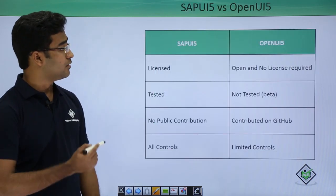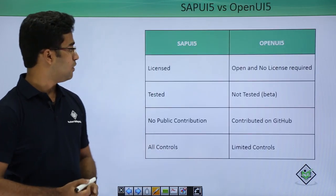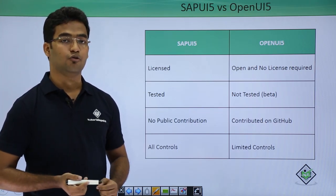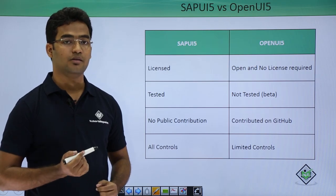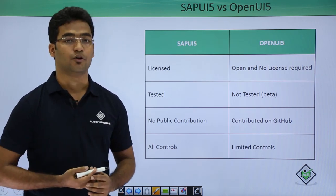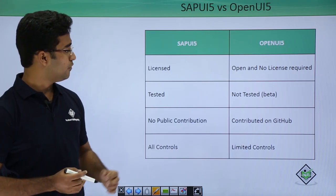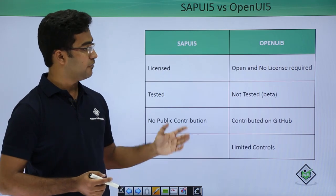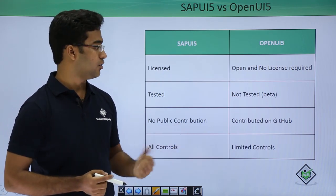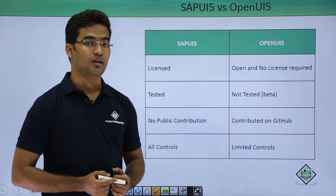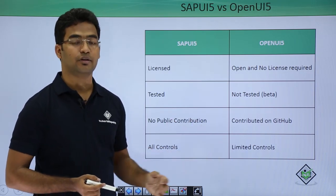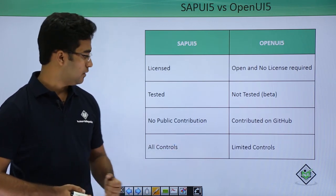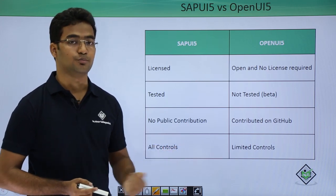Now let us compare SAPUI5 and OpenUI5. SAPUI5 is the licensed product of SAP, but OpenUI5 is the open version and no license is required. Whenever SAPUI5 versions are released they are tested and checked, but OpenUI5 versions are not checked — they are beta versions put onto GitHub so that developers can contribute. No public contributions are supported for SAPUI5 itself.